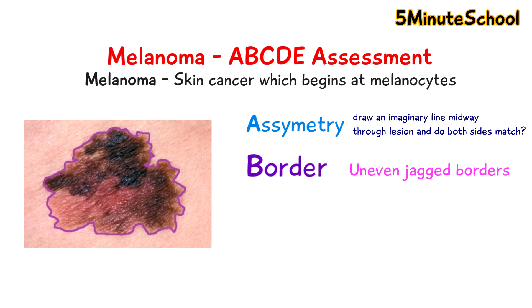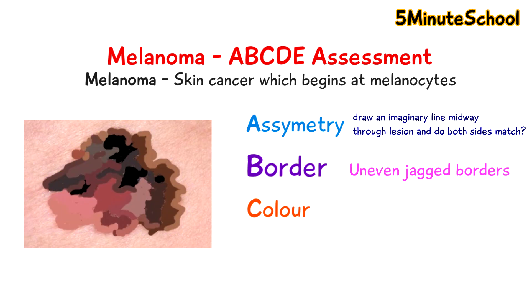C stands for colour, so lesions which have multiple colours may be more serious. Melanomas may have different shades of blue, black, brown, red and white, whereas benign skin lesions are usually just one colour.